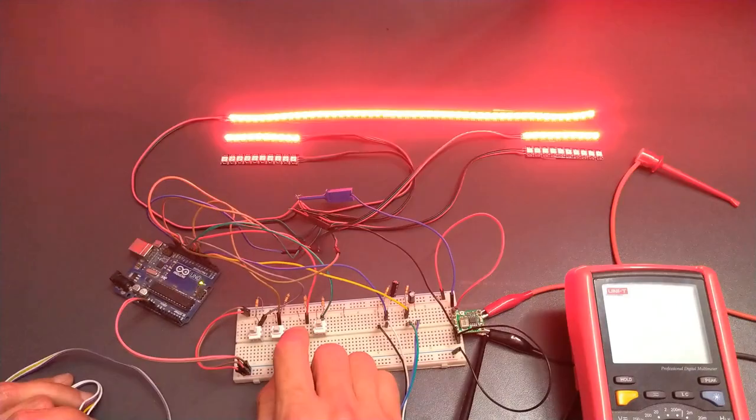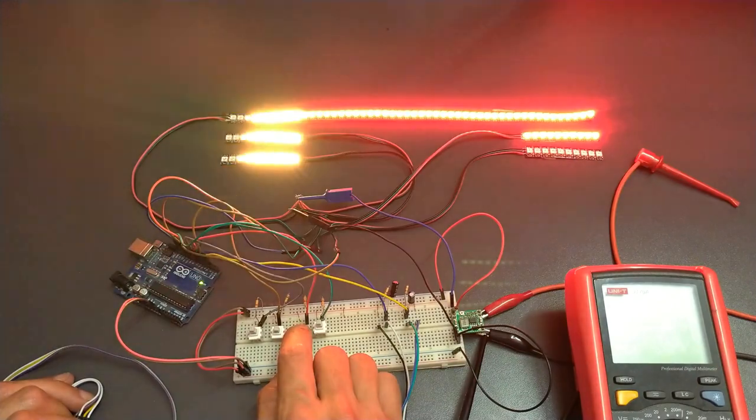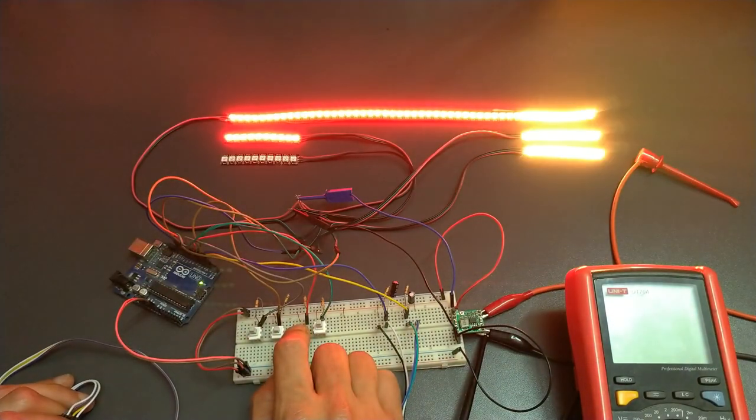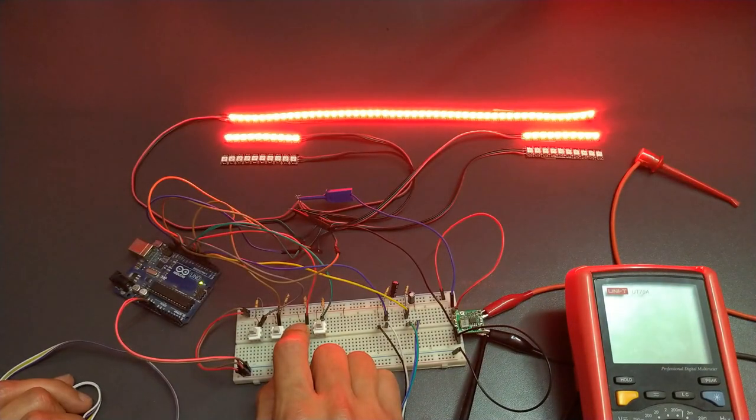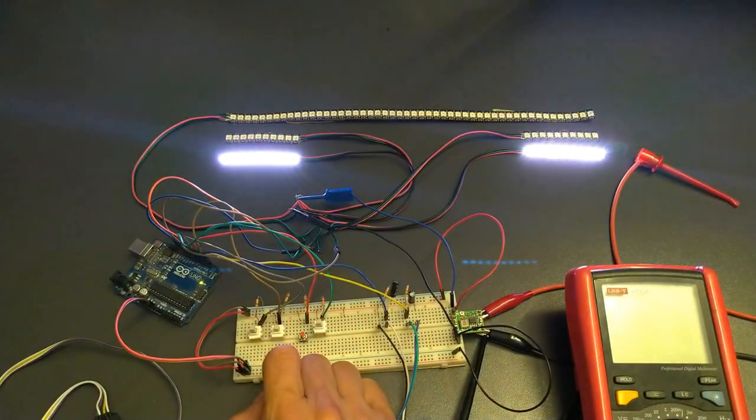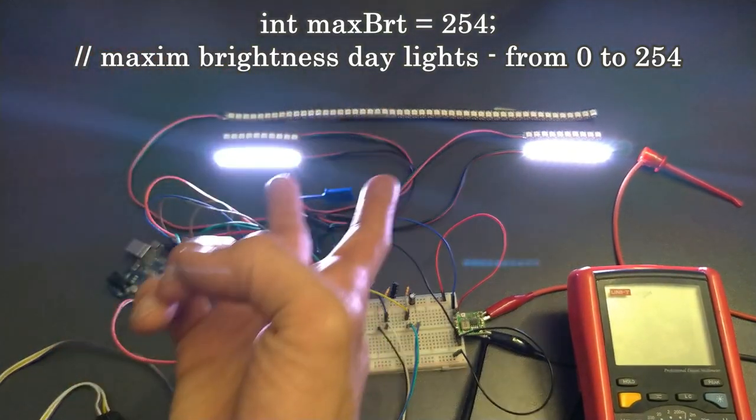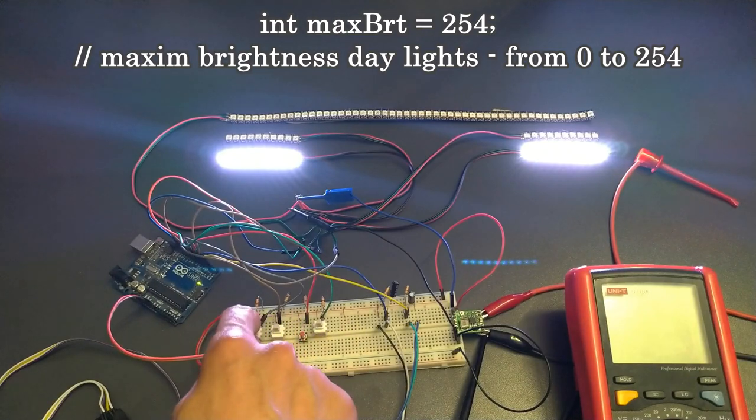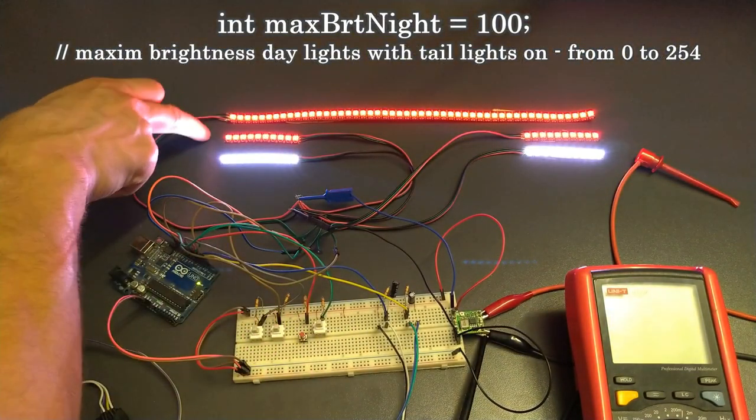We have brake light, we also have daylight that has actually 2 max brightnesses, one with taillights off and one with taillights on.